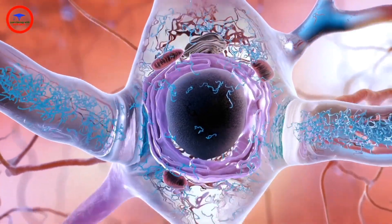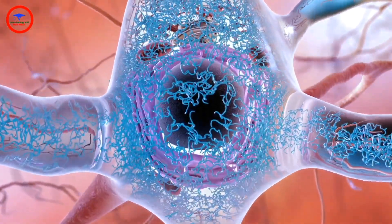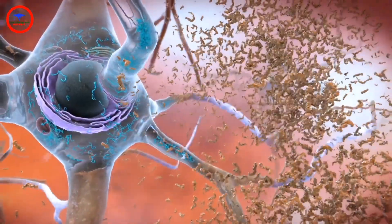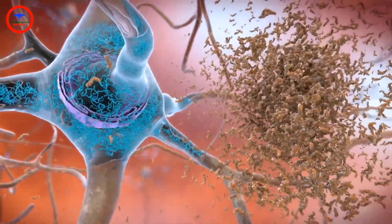It appears that abnormal tau accumulates, eventually forming tangles inside neurons. And beta-amyloid clumps into plaques, which slowly build up between neurons.